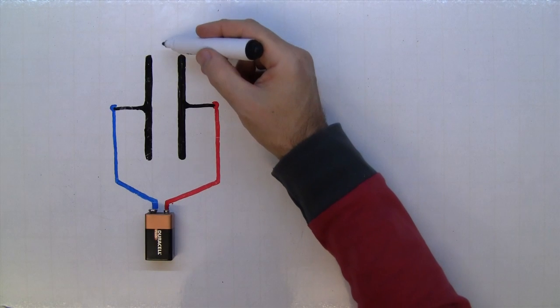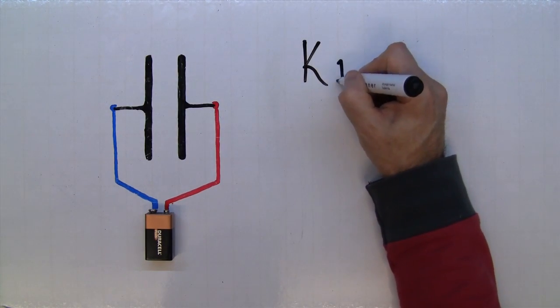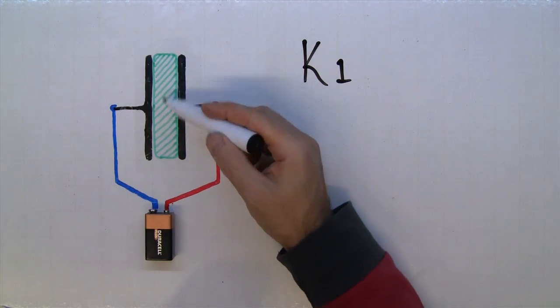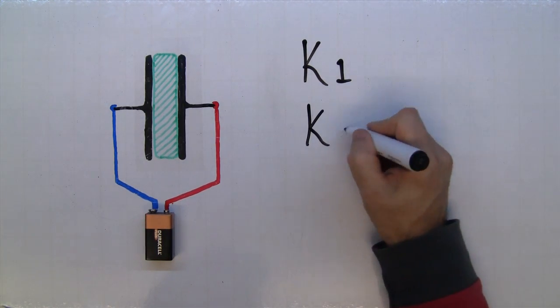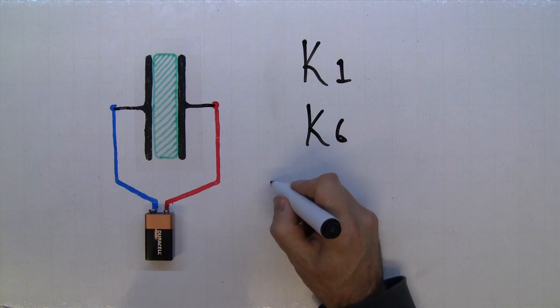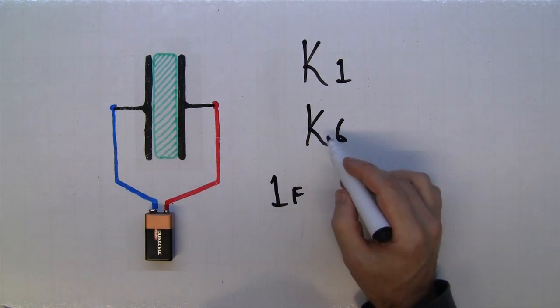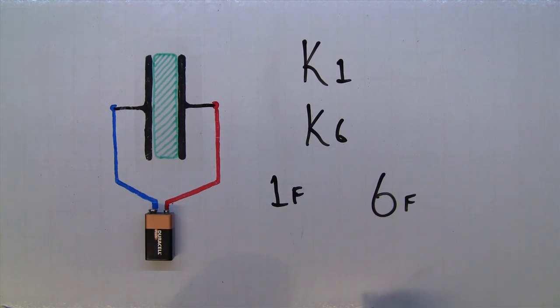If this capacitor just had a vacuum between it, then the dielectric constant would be 1. If we add a dielectric such as mica, then mica has a dielectric constant of 6. So if it's a 1 farad capacitor and the dielectric constant is 6, then that would be a 6 farad capacitor, because capacitance would be equal to the constant times capacitance.